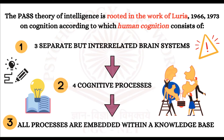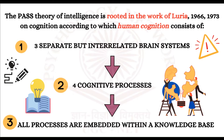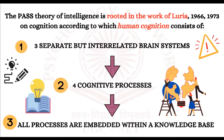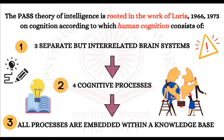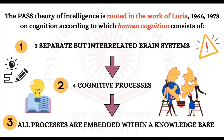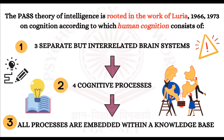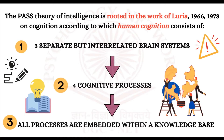The PASS theory of intelligence is rooted in the work of Luria, 1966 and 1973, on cognition. According to Luria, human cognition consists of three things which are all interconnected — but I am presenting them separately for clarity. The first is three separate but interrelated brain systems.